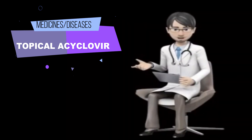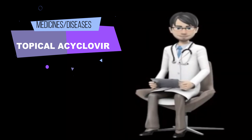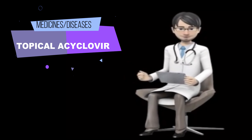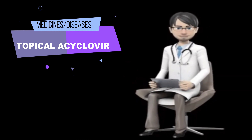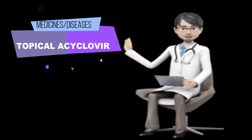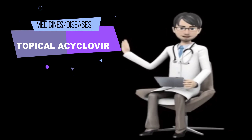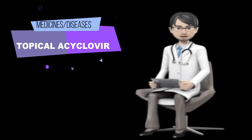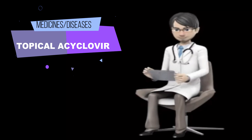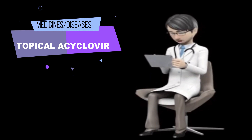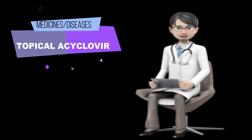Topical acyclovir comes as a cream and an ointment to apply to the skin. Acyclovir cream is usually applied 5 times a day for 4 days. It may be applied at any time during a cold sore outbreak, but it works best when applied at the very beginning of a cold sore outbreak, when there is tingling, redness, itching, or before a bump of the cold sore has formed.